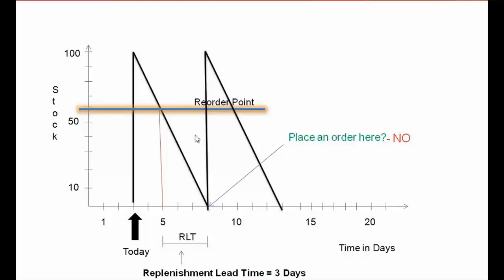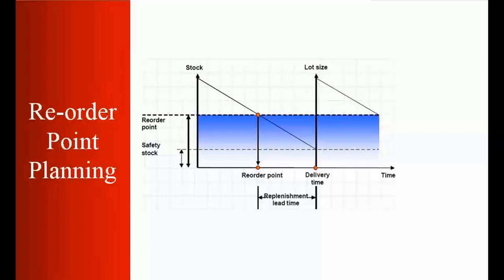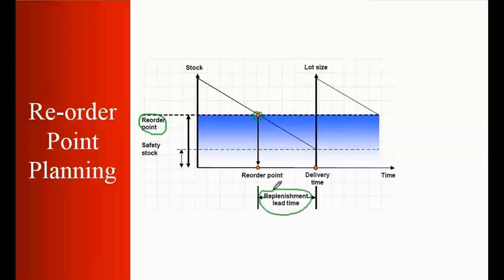Now let us see the reorder point in SAP language. Looking at this graph, you can see the reorder point — this is where we are placing an order, and this is the replenishment lead time. We also need to consider safety stock. For example, 20 pieces of safety stock, 60 pieces as the reorder point where we place the order, and total stock of 100 pieces.